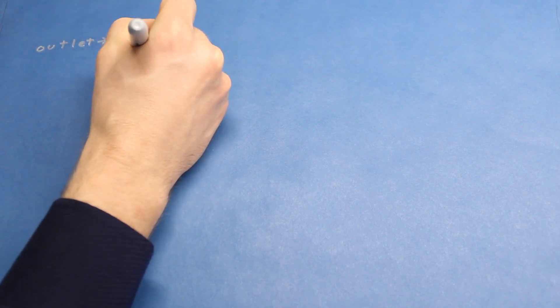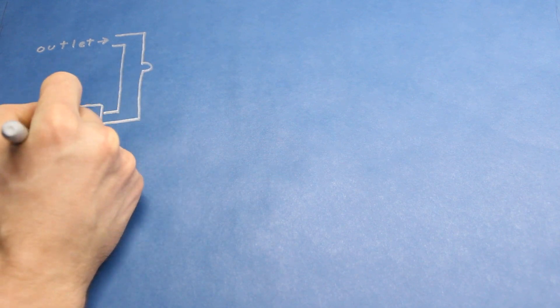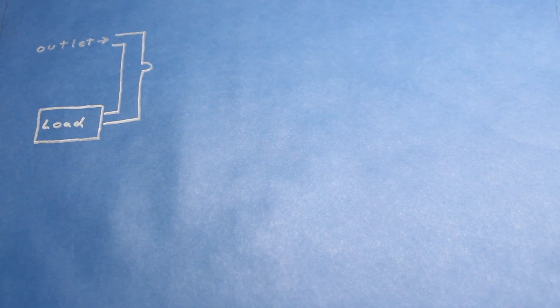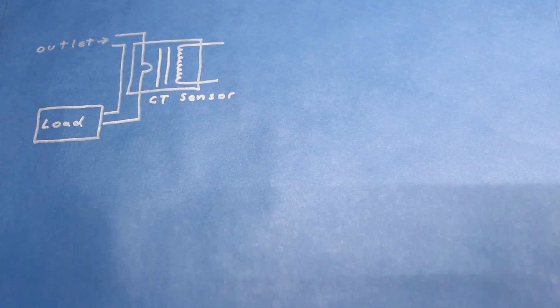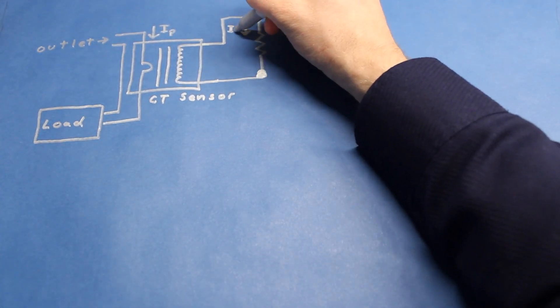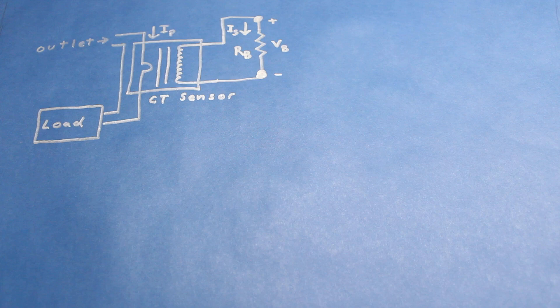To create our sensor circuit, we want to put the hot or neutral line through the CT sensor's core. As current flows through to our load, like a lamp, a current is induced on the secondary windings. We want to choose a value for the burden resistor, RB, so that the voltage across it can be measured by an analog-to-digital pin on the photon.